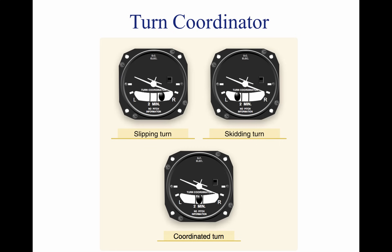In a slip, the rate of turn is too slow for the angle of bank, and the ball moves to the inside of the turn. In a skid, the rate of turn is too great for the angle of bank, and the ball moves to the outside of the turn. One additional tool is a yaw string — simply a string or piece of yarn attached to the center of the windscreen. When in coordinated flight, the string trails straight back over the top of the windscreen. When the aircraft is either slipping or skidding, the yaw string moves to the right or left depending on the direction. During the preflight, check that the inclinometer is full of fluid with no air bubbles, and the ball should be resting at its lowest point. When taxiing, the turn coordinator should indicate a turn in the correct direction while the ball moves opposite the direction of turn.